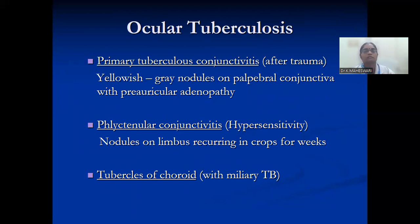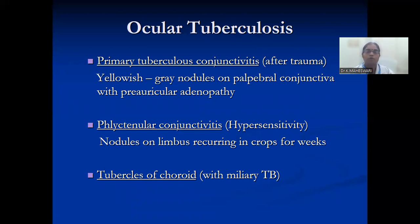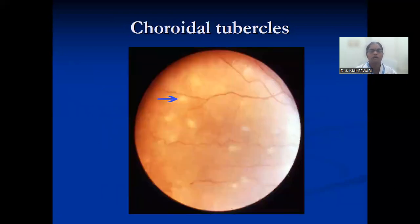Ocular tuberculosis can be either primary or related to tuberculosis hypersensitivity or miliary tuberculosis. After trauma, there are gray nodules on the palpebral conjunctiva. It can manifest as preauricular lymphadenopathy, hypersensitivity nodules on the limbus, recurring hypersensitivity, or tuberculosis of the choroid with chorioretinitis — choroidal tuberculosis.